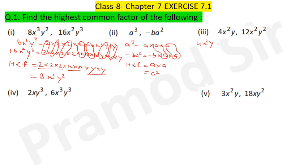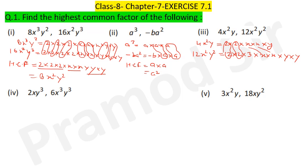4x²y = 2×2 and x×x and y. Same as 12x²y² = 2×2×3 and x×x and y×y. What matches: first 2, then second 2, then x two times, and y one time. So HCF = 2×2×x×x×y = 4x²y.